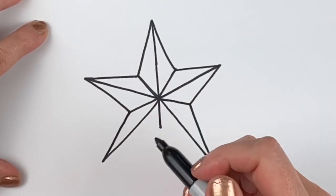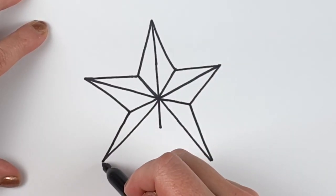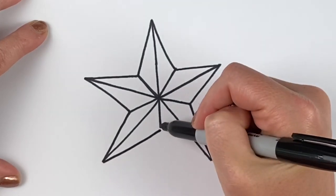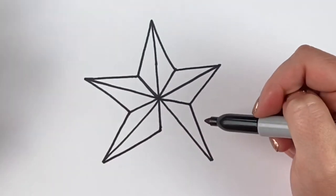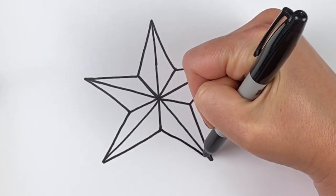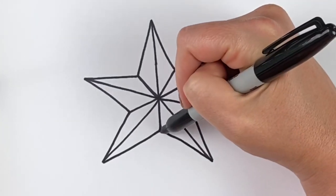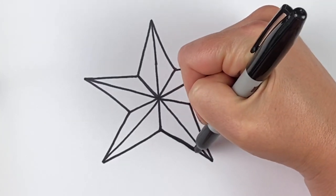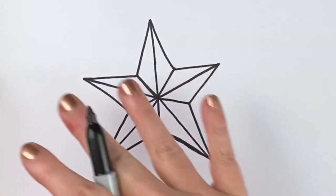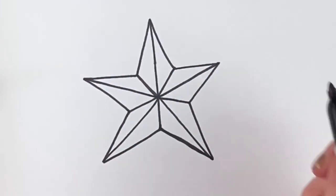I've got another one to connect down here. There you go. Look at that really cool star that you just drew. This is going to be perfect for making a 4th of July sign.